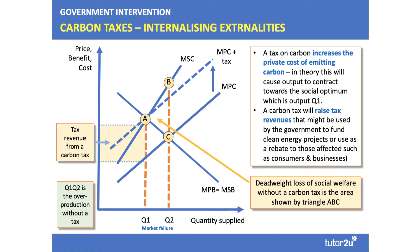There's a deadweight loss of social welfare if you don't tax, shown by the area ABC. So a carbon tax, in theory, is an effective way of internalising the externalities. We're not going to evaluate this one in this video because we've done a separate video on carbon tax — just type that into the YouTube search.